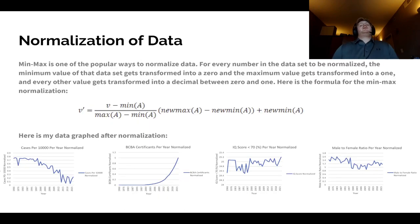So the normalization of data. Min-max is one of the popular ways to normalize data. For every number in the data set to be normalized, the minimum value of that data set gets transferred into a 0, and the maximum value gets transformed into a 1. And every other value gets transformed into a decimal between 0 and 1. Here is the formula for the min-max normalization. Then if we look at the bottom, here is my data graphed after the normalization.